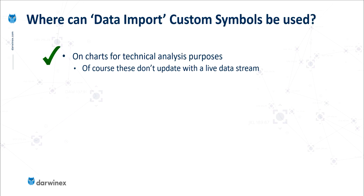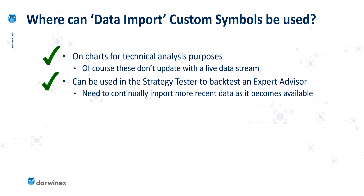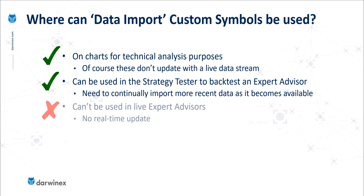Let's take a look at where these data import custom symbols can be used within the platform. Firstly, you can open charts of these symbols just in the same way as any standard symbol from your broker. Bear in mind, though, that these don't automatically update and you would need to re-import more recent data to get that. You can also backtest in the strategy tester against these custom symbols, but because these don't get updated in real time, you can't use them in your live EA. It's worth noting that this last limitation is not a problem for the calculated symbols, as you'll see later in the episode.